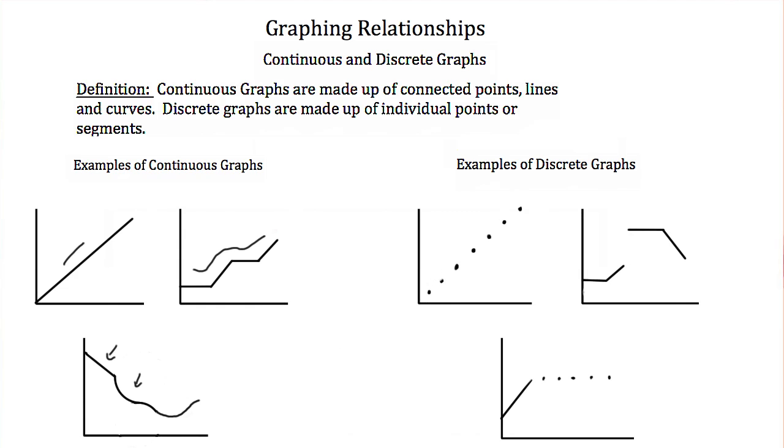Discrete graphs are basically the opposite of continuous graphs. It can be a collection of points, like this one, or a collection of segments, like we have here. But they just don't touch, or they have a break. They can also be made up of combinations of segments and points. But as long as there is a break in the line, it is a discrete graph.